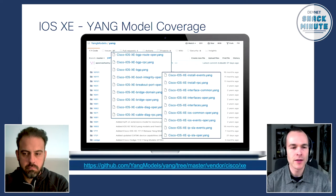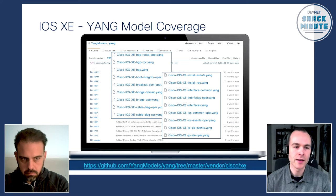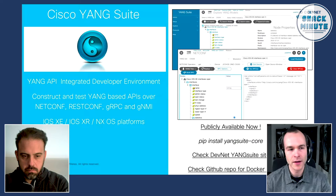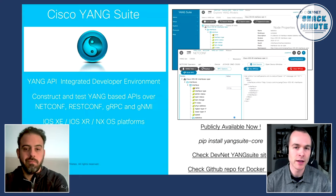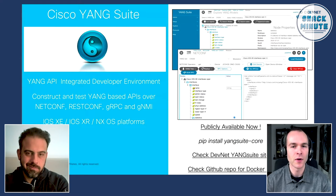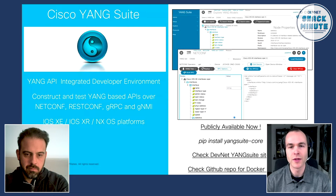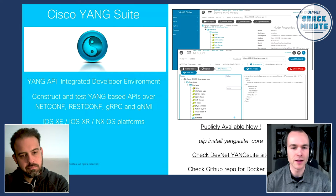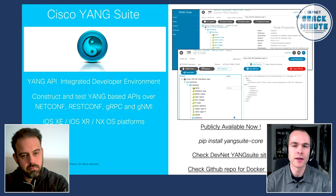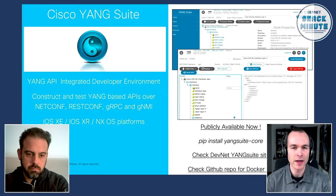Yang Suite allows us to download that data model, load it, and understand what's exposed within it. Taking that one step further, we're actually able to construct and test the APIs. Yang Suite will also send and transmit that API call to the network device and give us details about the results. So in the example here, we have a pre-generated API call to get the interface statistics. When we go over into the demo and run this, we'll actually see the data that comes back from the network device.